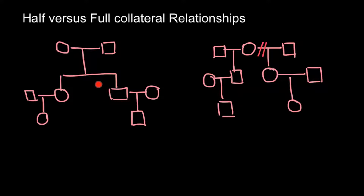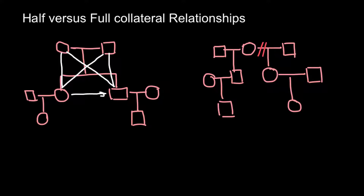In the first family we see full siblings with two shared parents. In the second family we see half siblings, related only through their mother but having different fathers. A daughter receives 50% of her genes from the mother's side and 50% from her father's side. Her brother also receives 50% from the mother and 50% from the father.